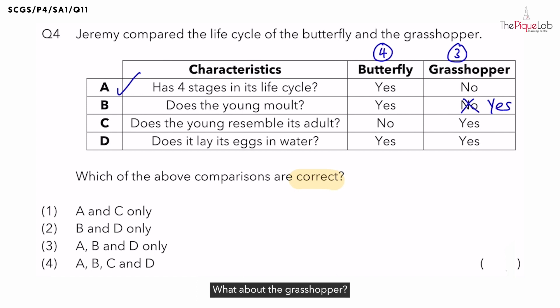What about the grasshopper? Does the young of the grasshopper, which is the nymph, resemble its adult? Yes. For insects that have three stages in its life cycle, such as the grasshopper, the young would resemble its adult. Hence, is this comparison true for both the butterfly and the grasshopper? Yes.